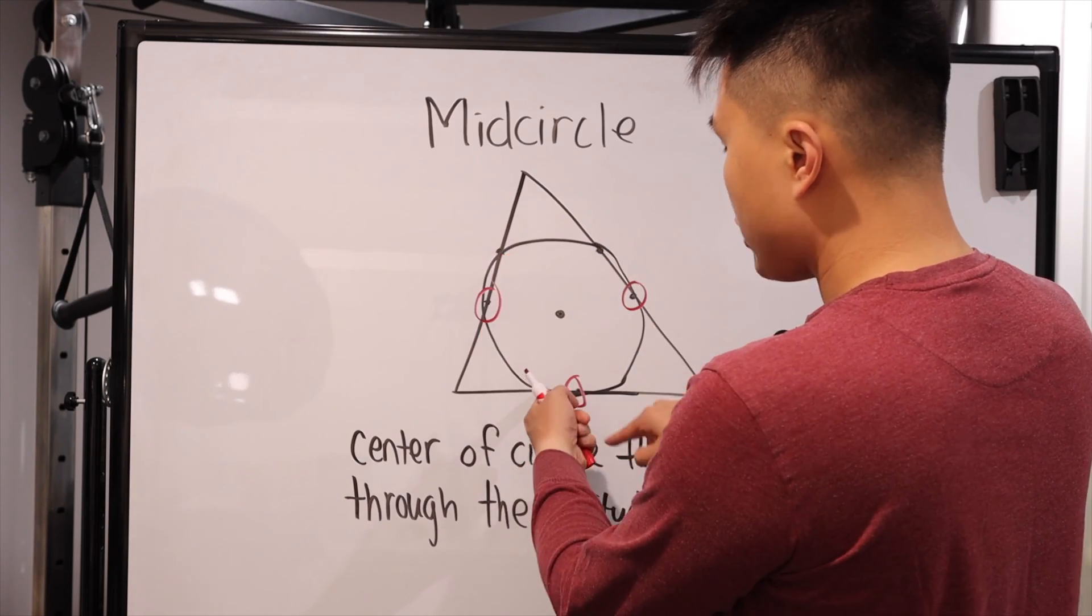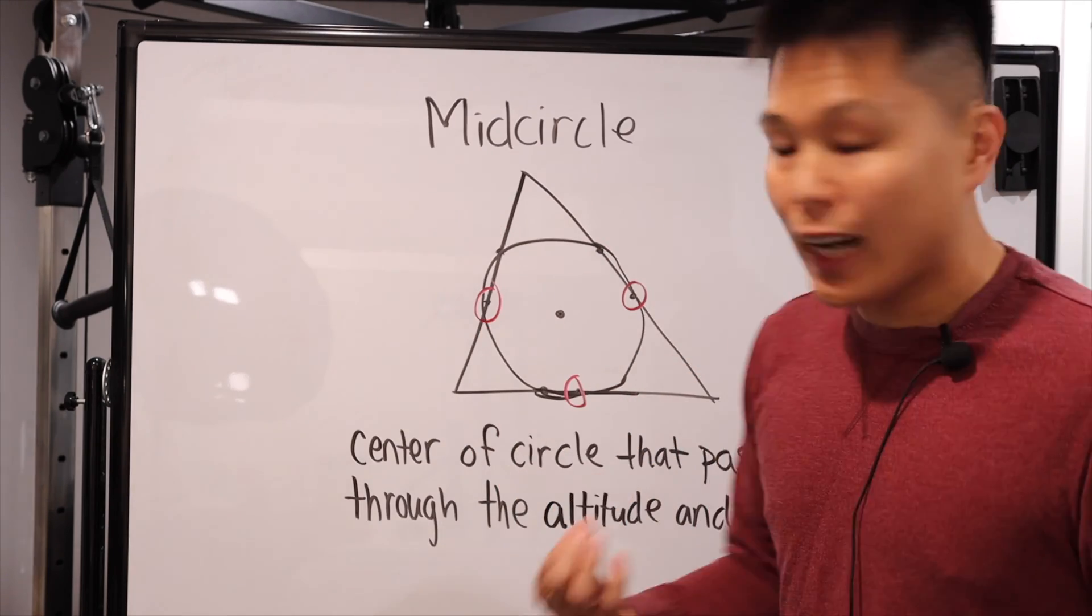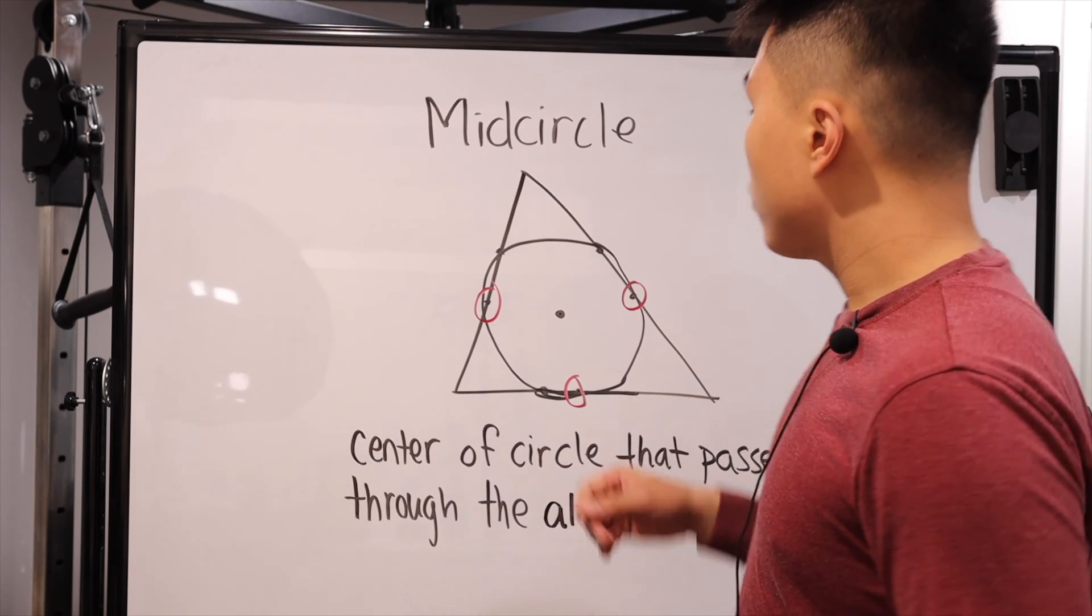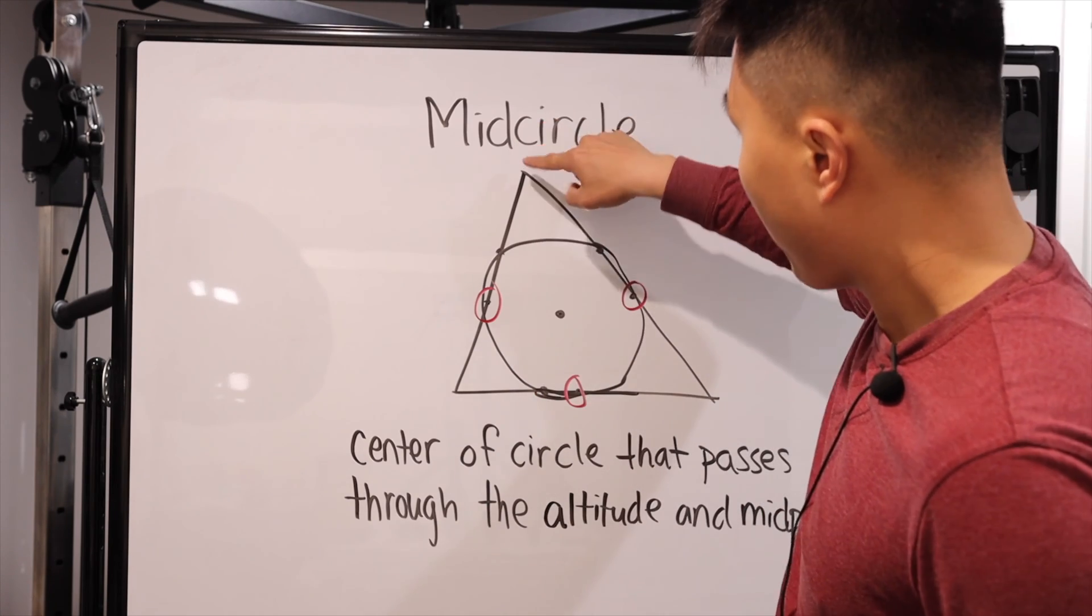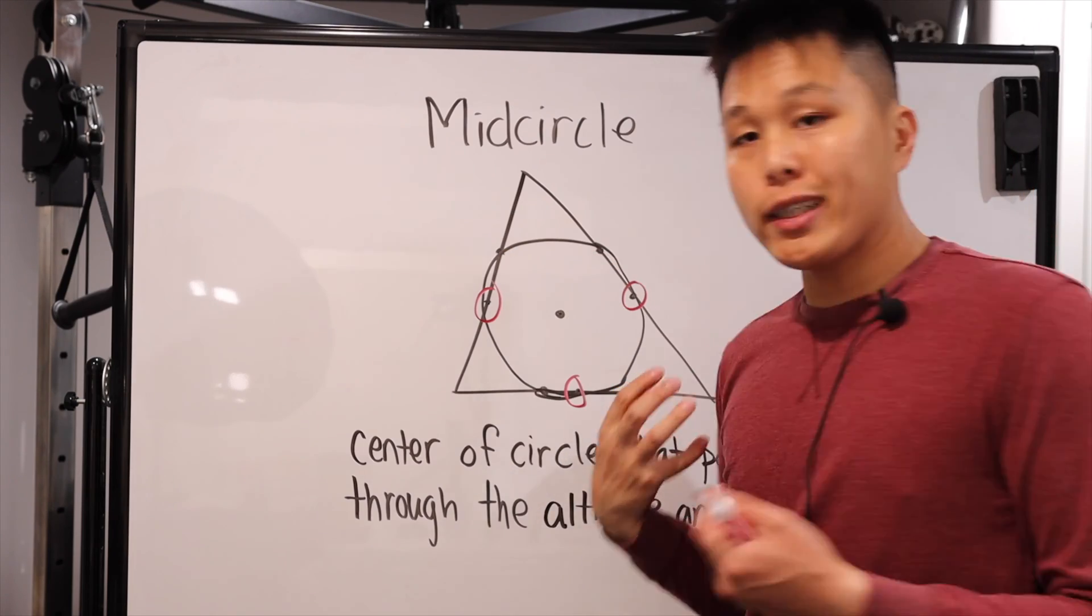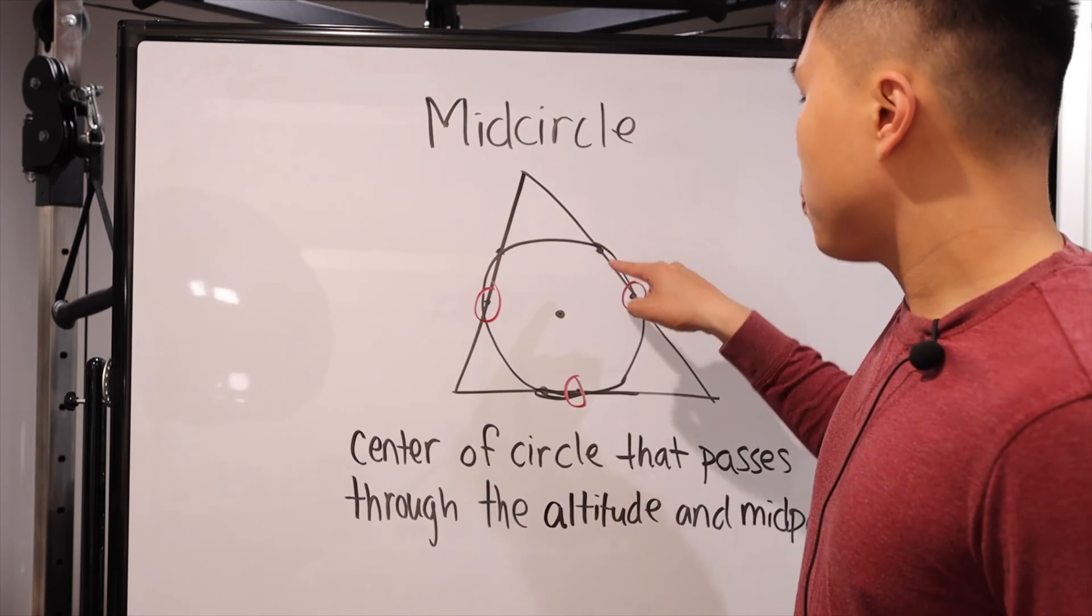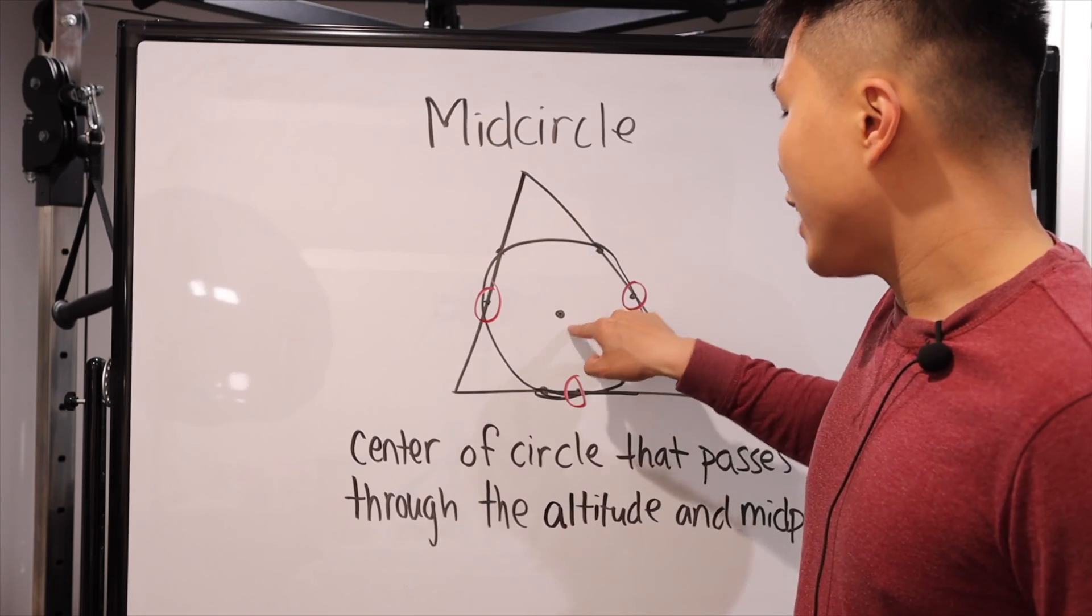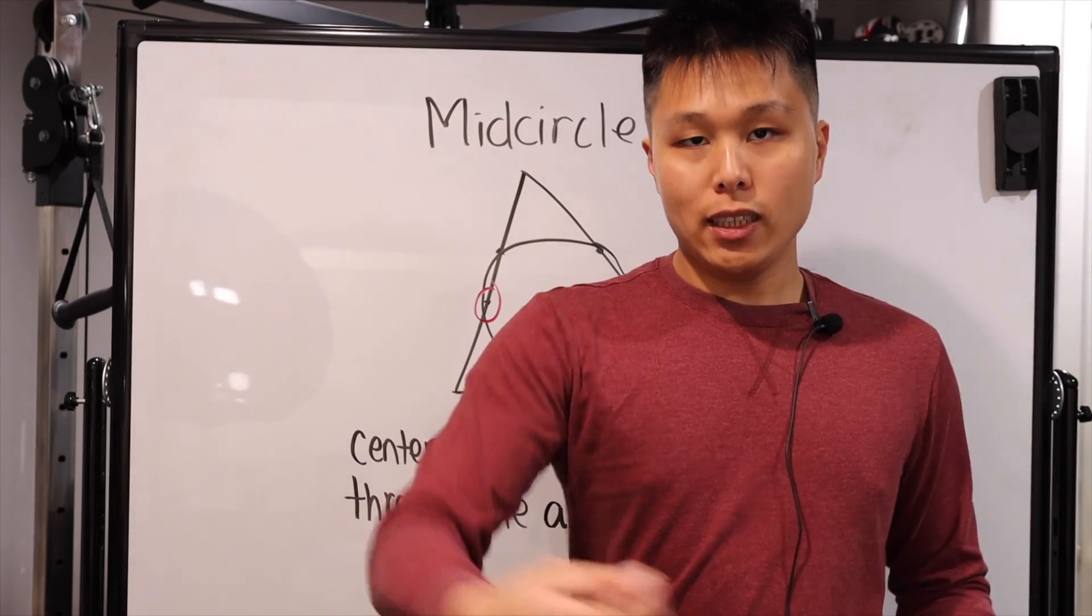So that means these points right here, the ones that I did not circle, those are the intersection of where you pick a vertices, draw a perpendicular line. Those are the points. So a circle that passes all six points, the center of that circle is known as the mid circle.